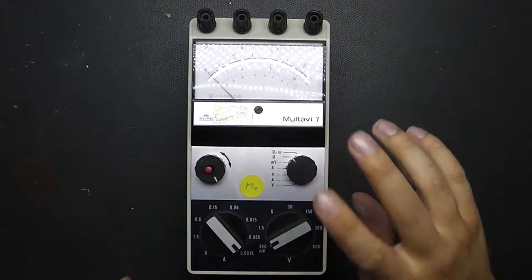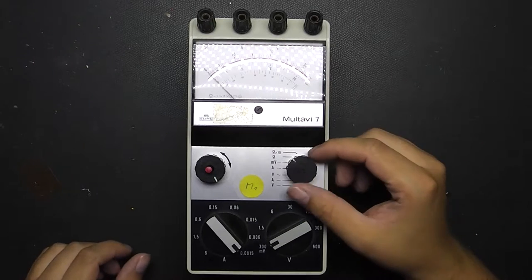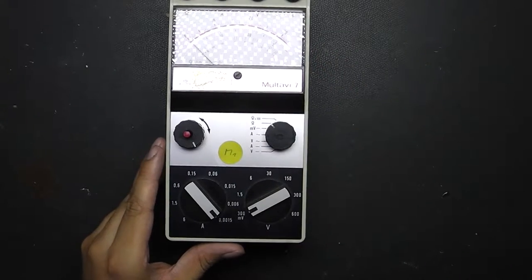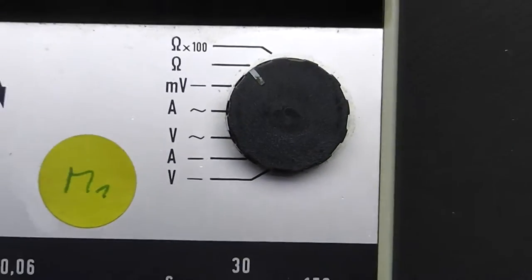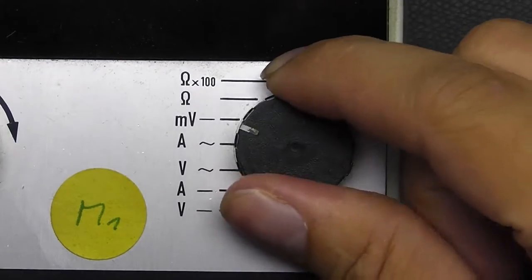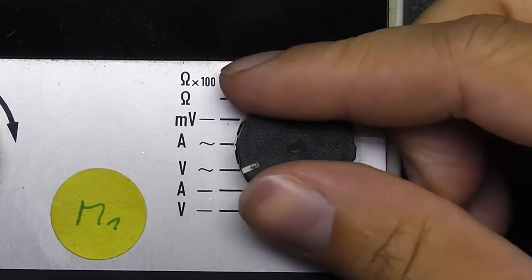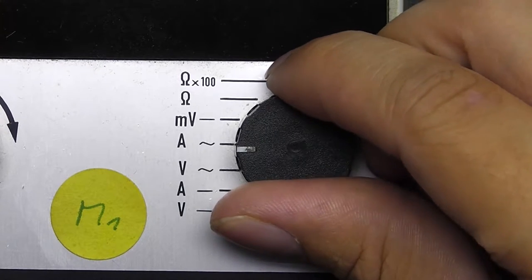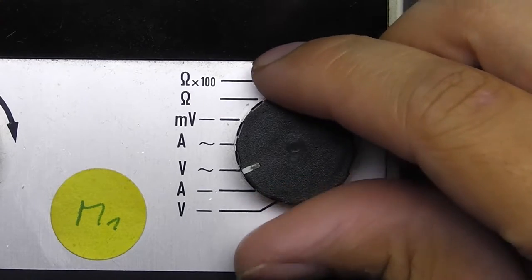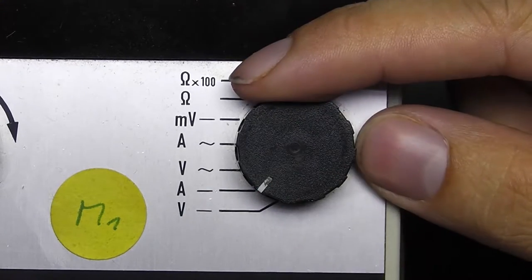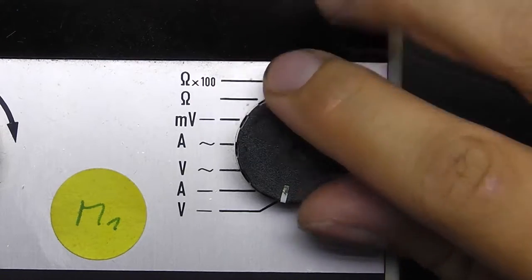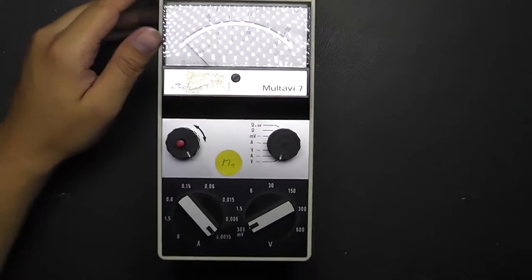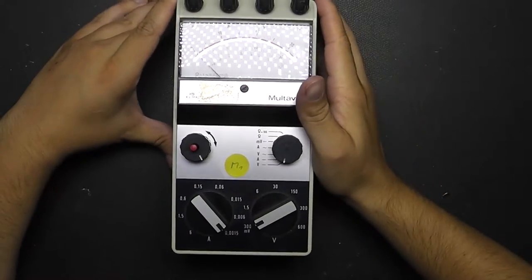The Hartmann Braun Multi V7 is as I already said capable of measuring AC and DC for volts and amps. Quite interesting is the layout of the range switch. I zoom in a bit here. You can see that the volts and amps ranges are alternating. So we have amps for alternating current and volts for alternating current and also amps for direct current and volts for direct current.